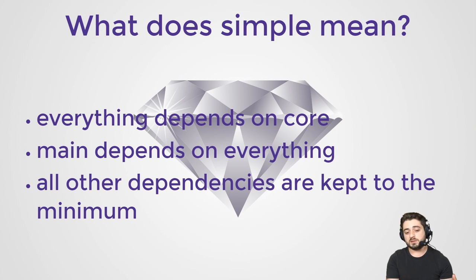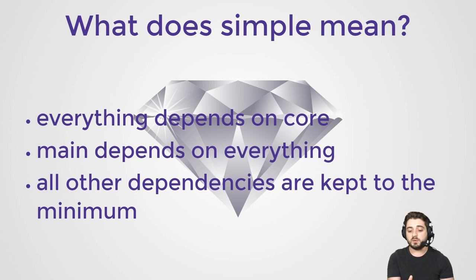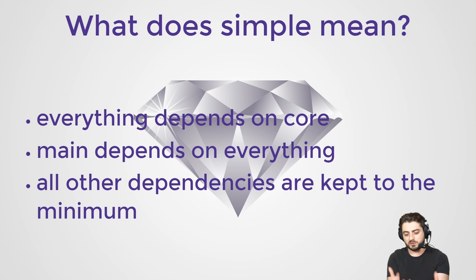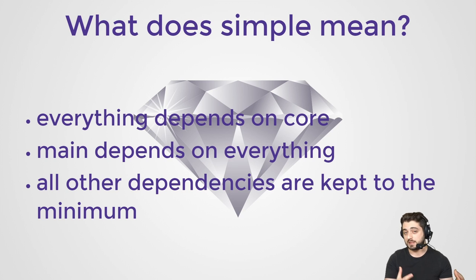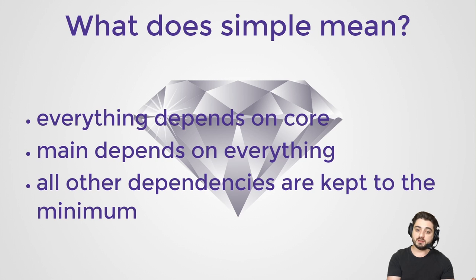I have a slide about simplicity — I wanted to be explicit about what it means to be simple. If you were to formalize the diamond architecture, it's basically only three rules: everything depends on the core, main depends on everything, and all other dependencies are kept to the minimum. It's going to become clear in just a couple of seconds. The solution is, obviously, the diamond architecture.